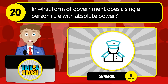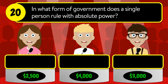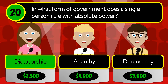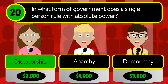Question number twenty: in what form of government does a single person rule with absolute power? Is it dictatorship, anarchy, or democracy? The correct answer is dictatorship.